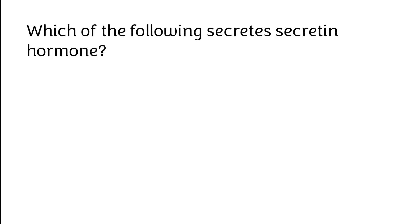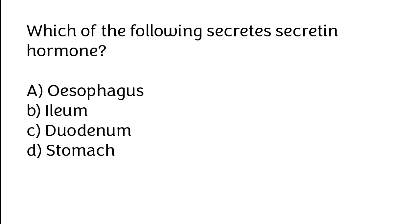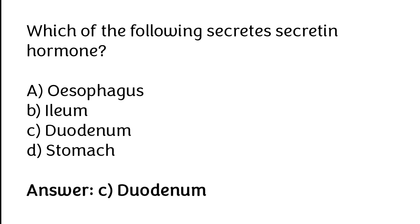Which of the following secretes secretin hormone? A) Oesophagus, B) Ileum, C) Duodenum, D) Stomach. The correct answer is option C — duodenum secretes secretin hormone.